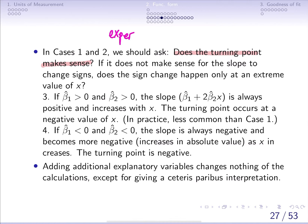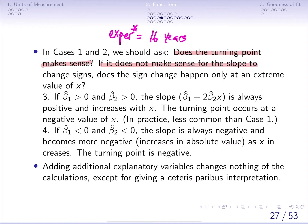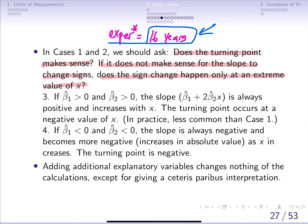For example, if experience* — our turning point — is 16 years, then we are saying that after 16 years the effect of experience on salary is changing. You can also ask whether the sign change happens only at an extreme value of x. If this value is 16 years, you can ask whether it is too high for your sample. Maybe everybody in the sample has only 10 or 12 years of experience and there's nobody with 16 years, so the sign change is happening only at extreme values of x.